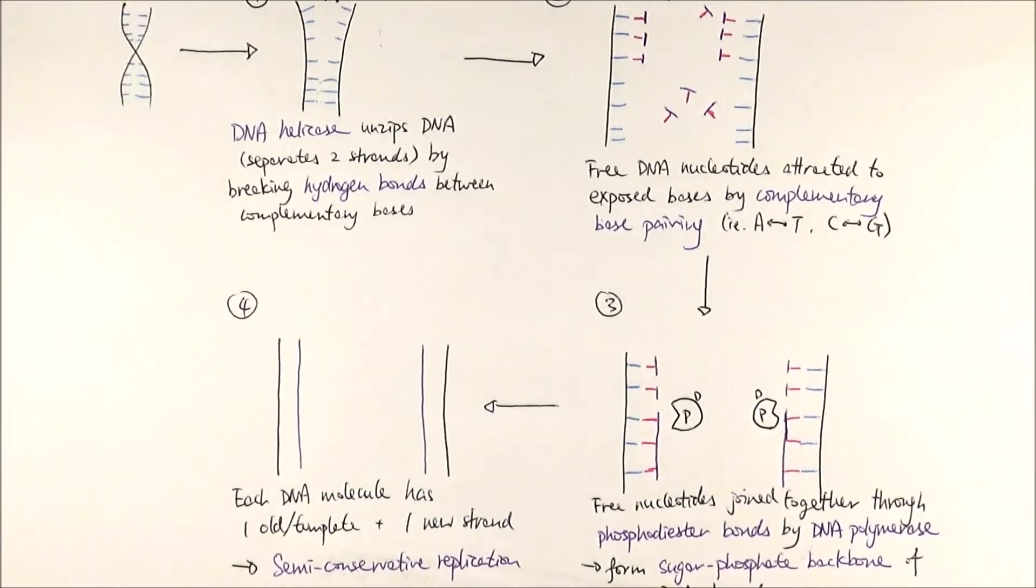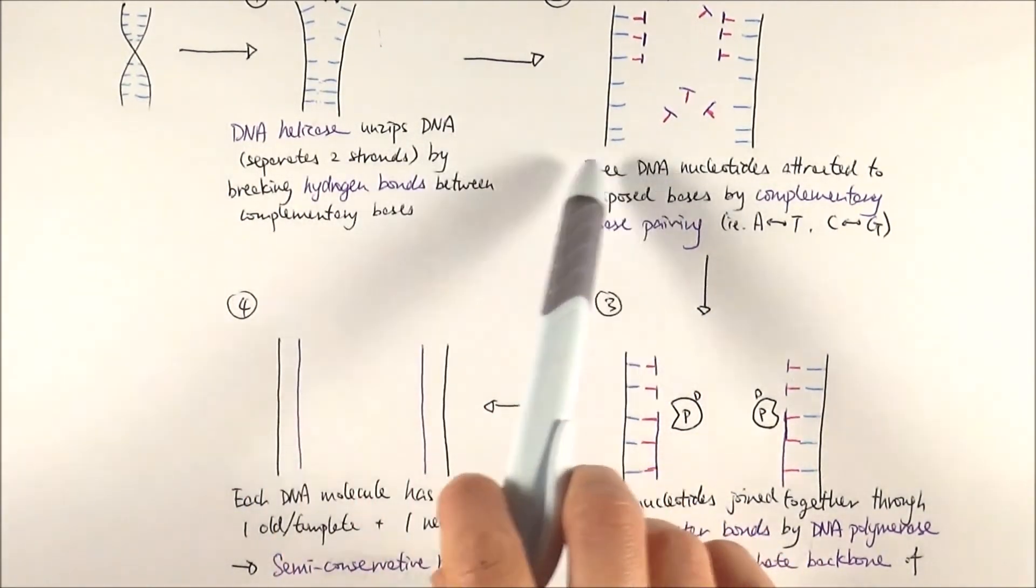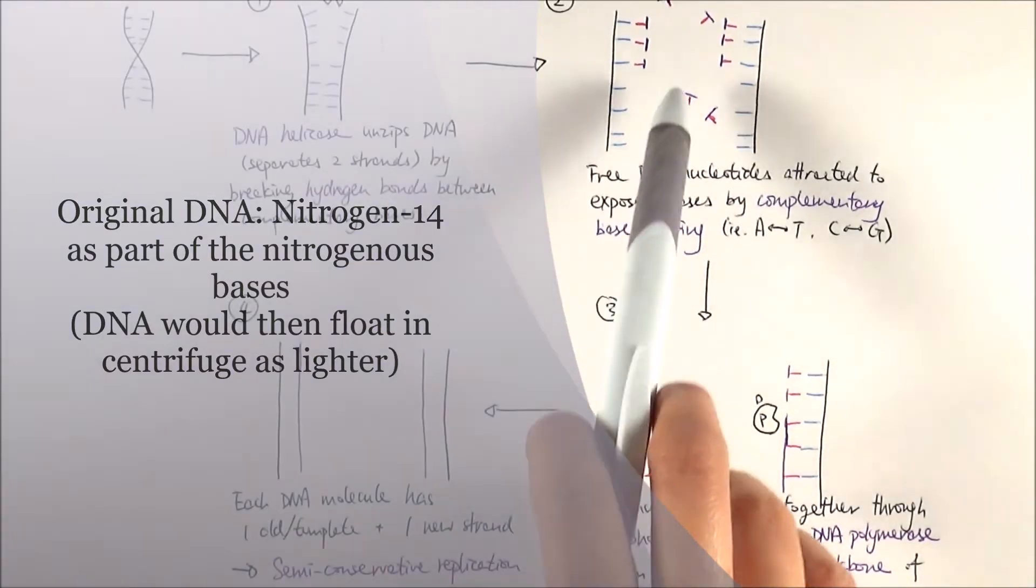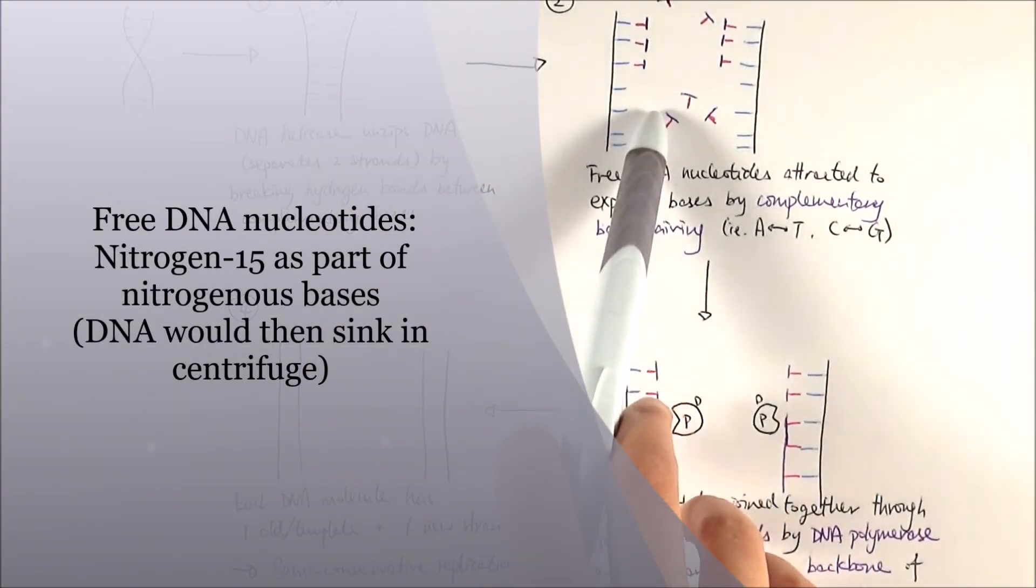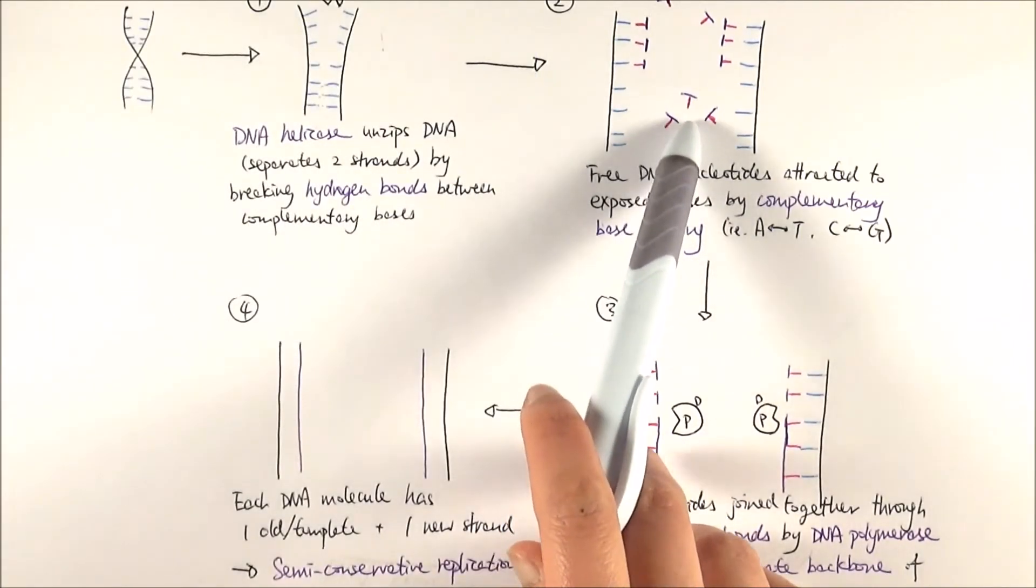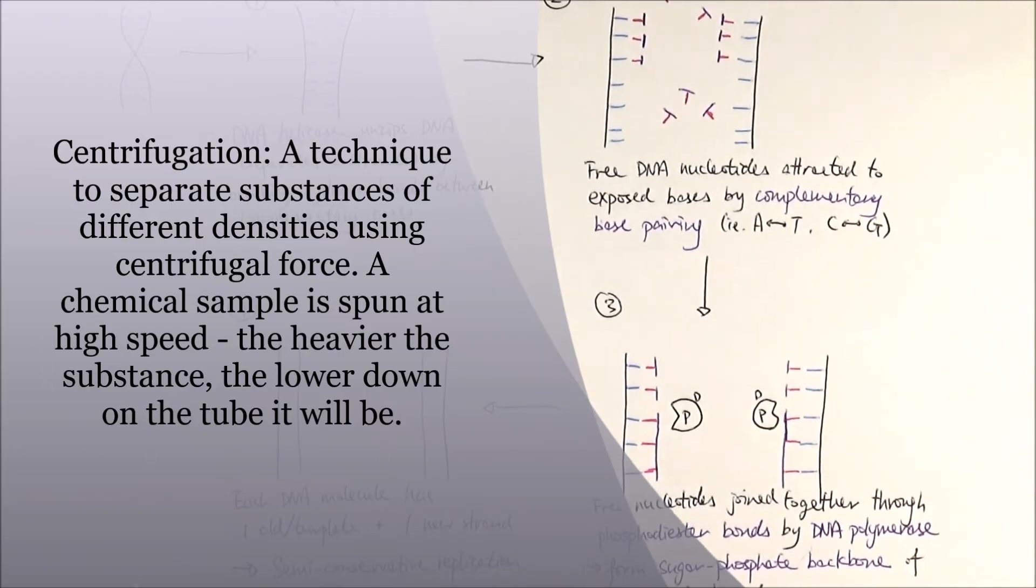There was a famous experiment that discovered this, often appearing as an exam question. They used different nitrogen isotopes for the nitrogenous bases - the old DNA strands had N-14, the normal lighter version, while the free nucleotides had N-15, the heavier nitrogen. They then performed centrifugation to see the results.